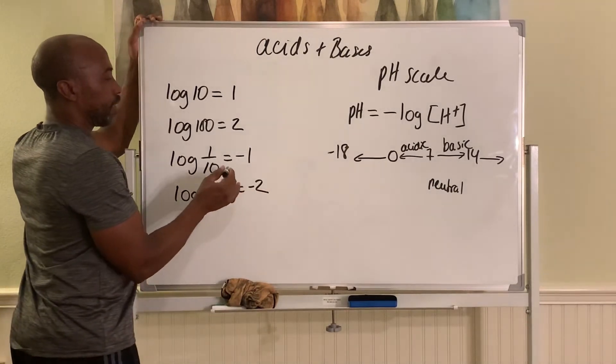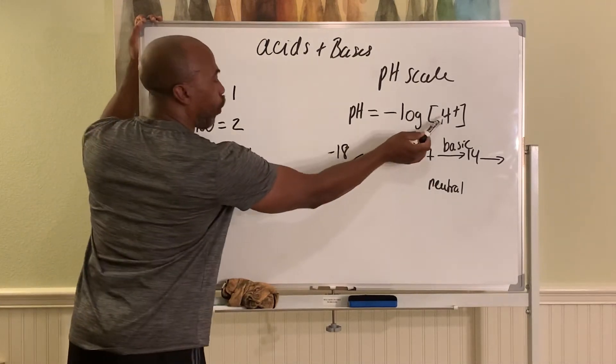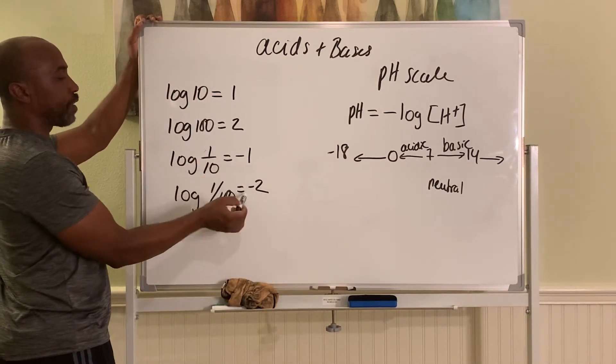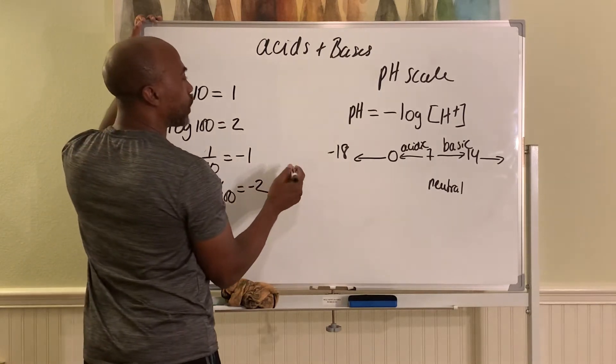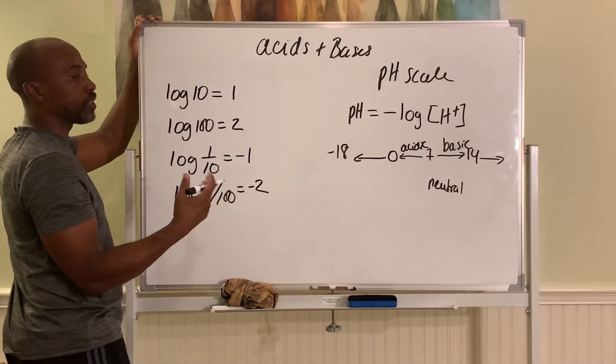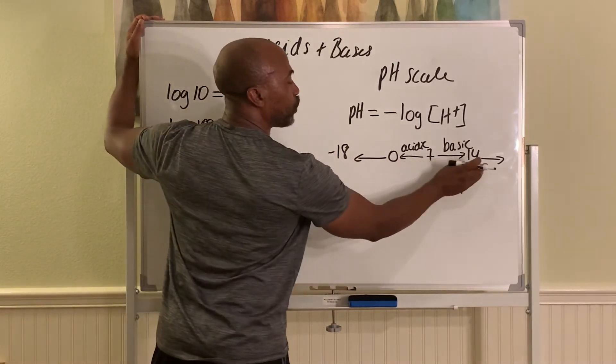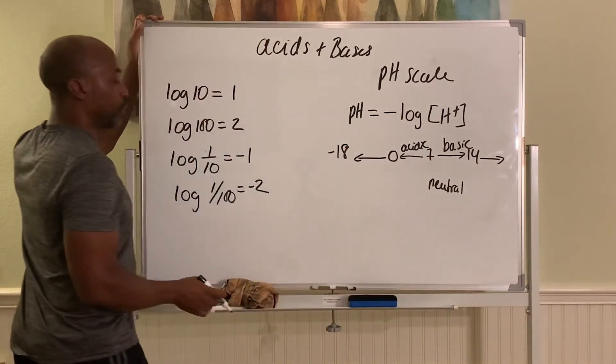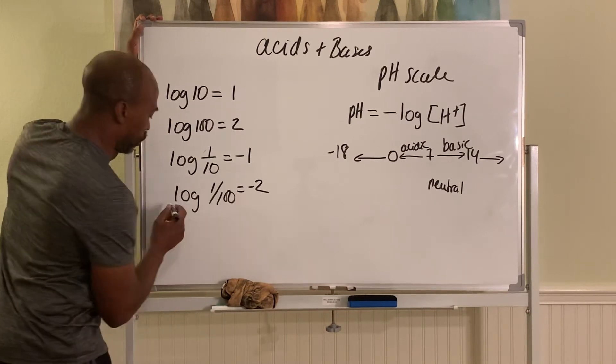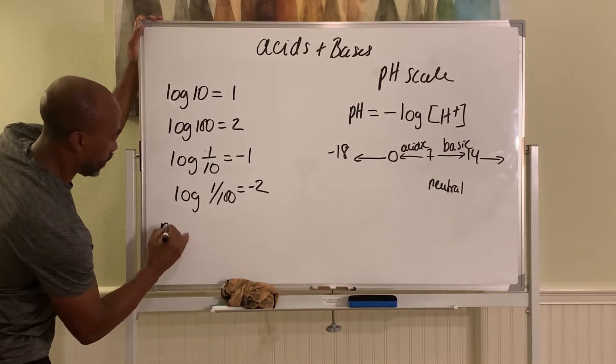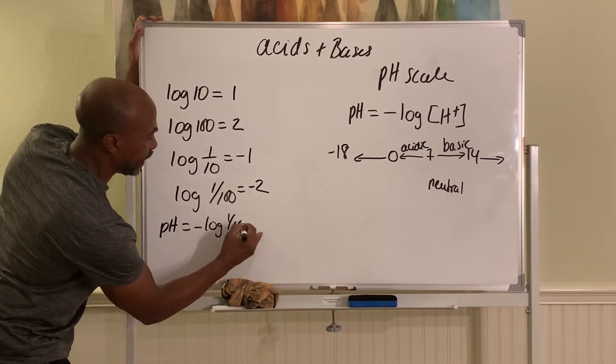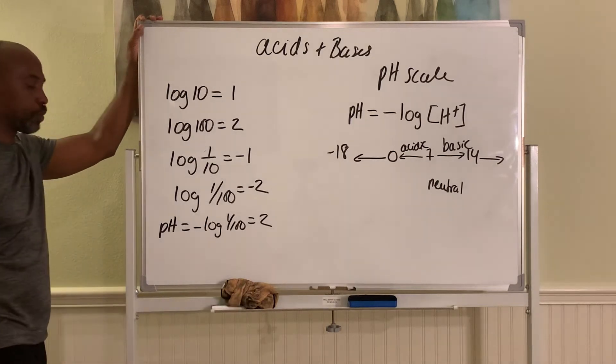And in the body, the concentration of H plus is always a fraction. Which means the log of that fraction is always a negative number. And so we usually multiply that by a negative. So a negative times a negative gives you a positive. So in the body, pH tends to be a positive number between 0 and 14 because we're taking the negative of a negative to give you a positive number. Like for example, so here, the pH of this would be negative log of that, which is equal to 2. That's why the pH tends to be positive.